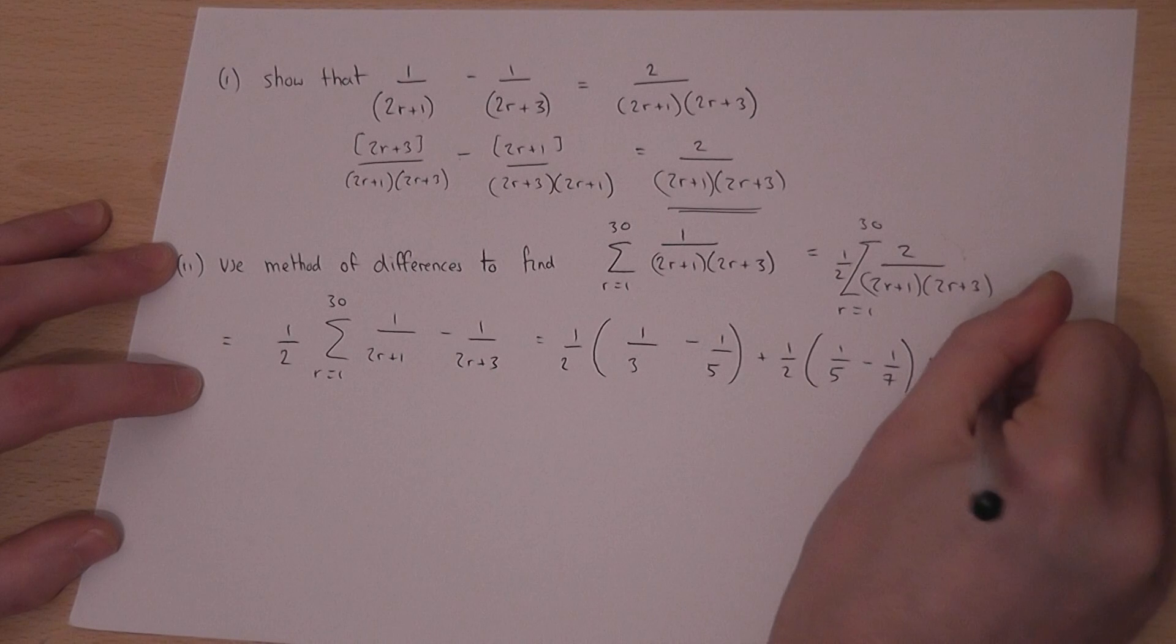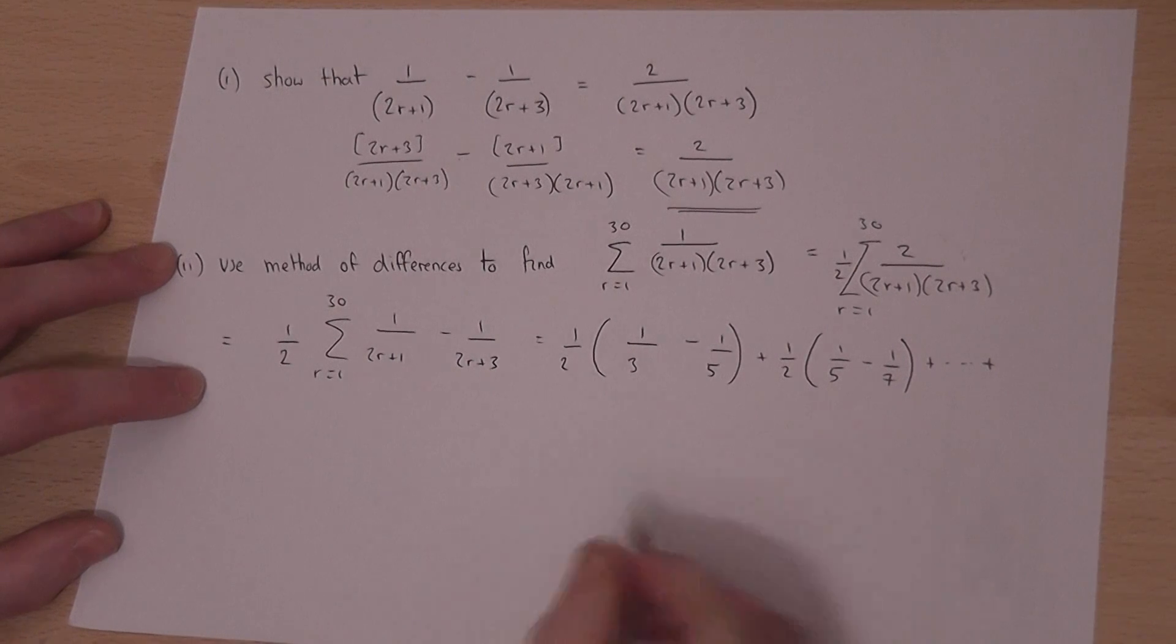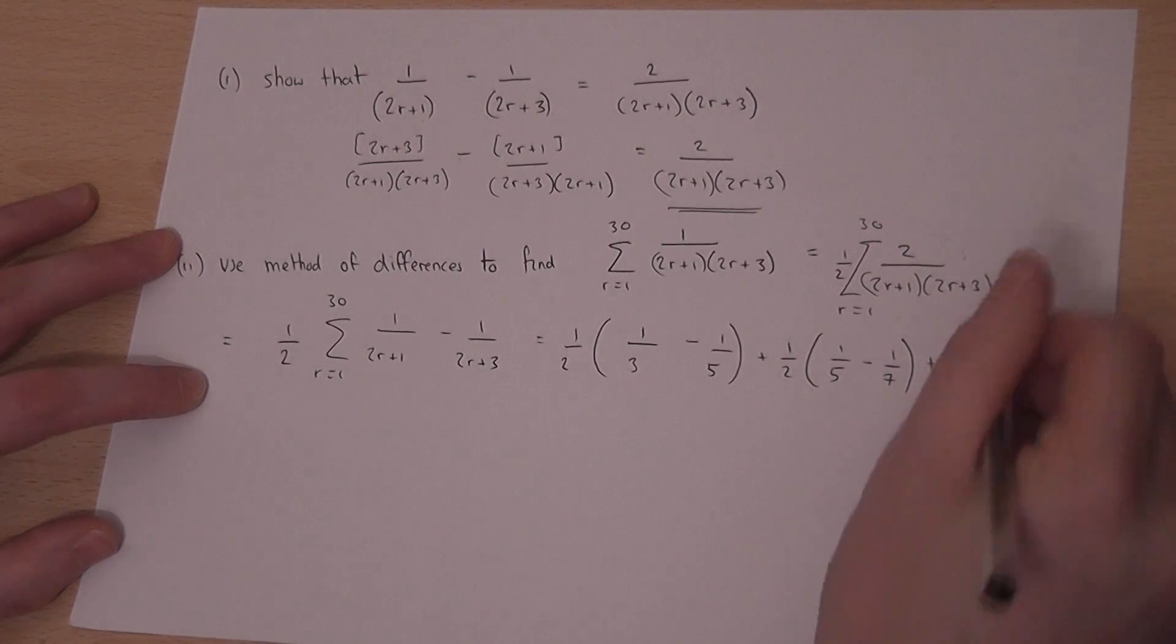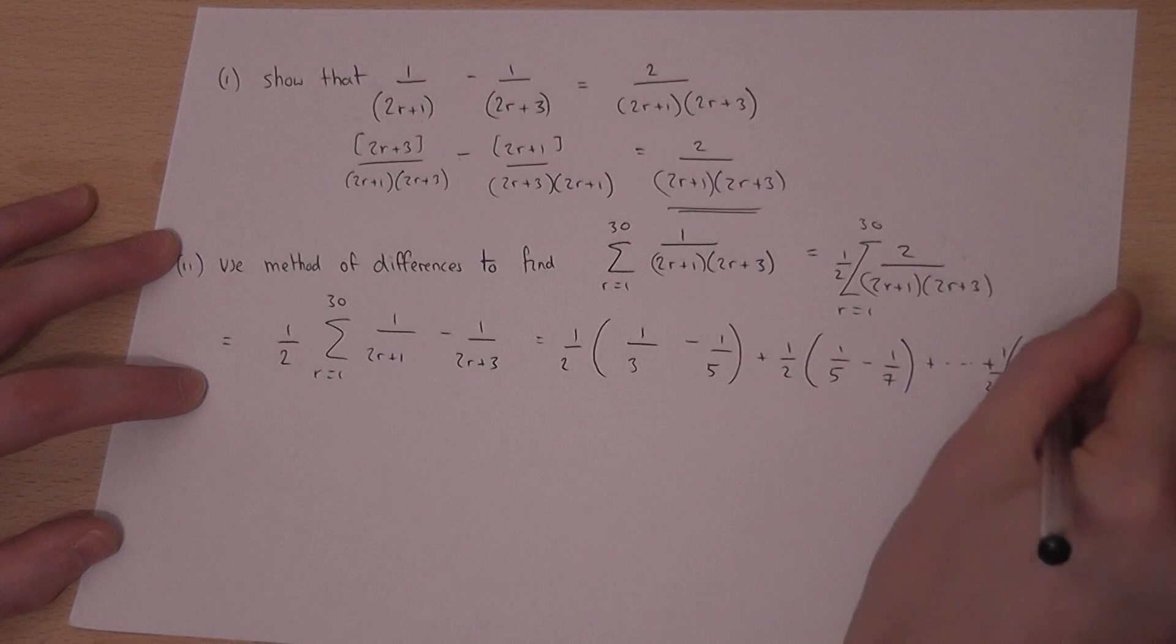And then final one. Let r equal to 30. I get 1 over 2, bracket 1 over 61 minus 1 over 63.